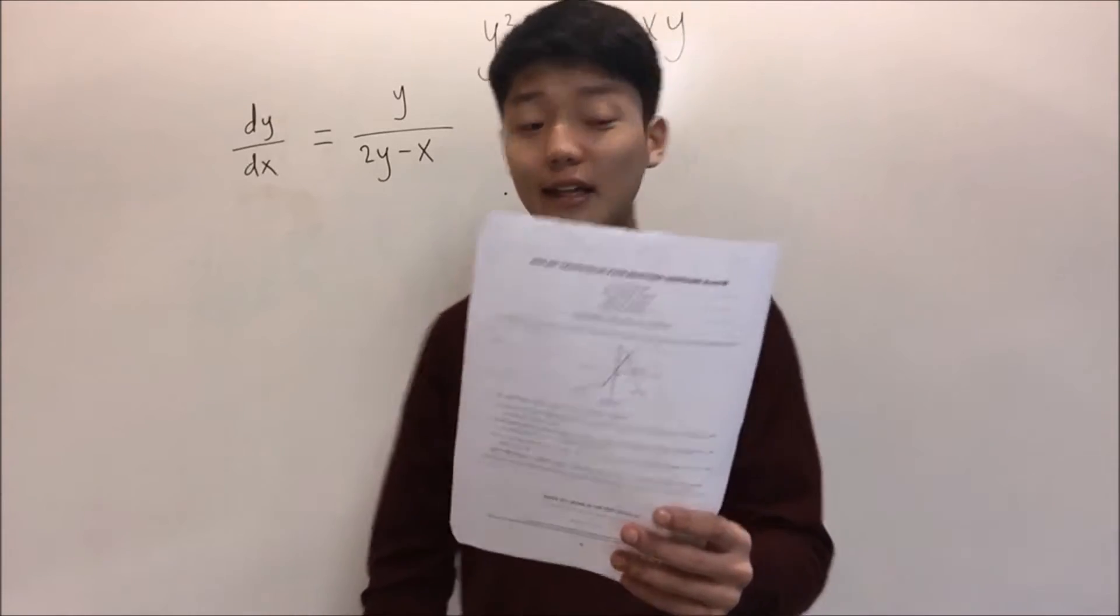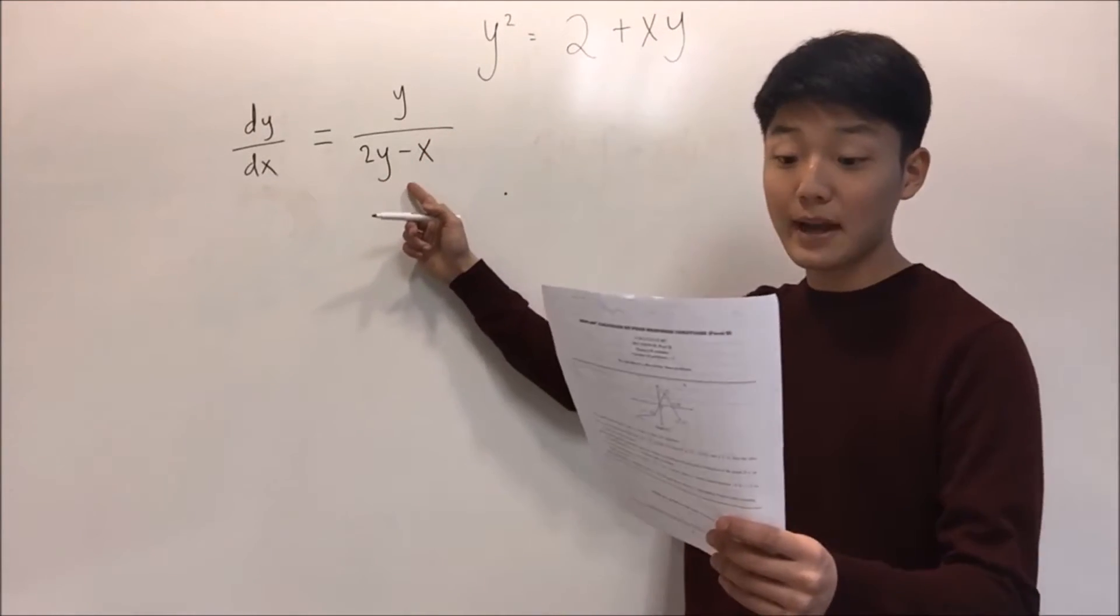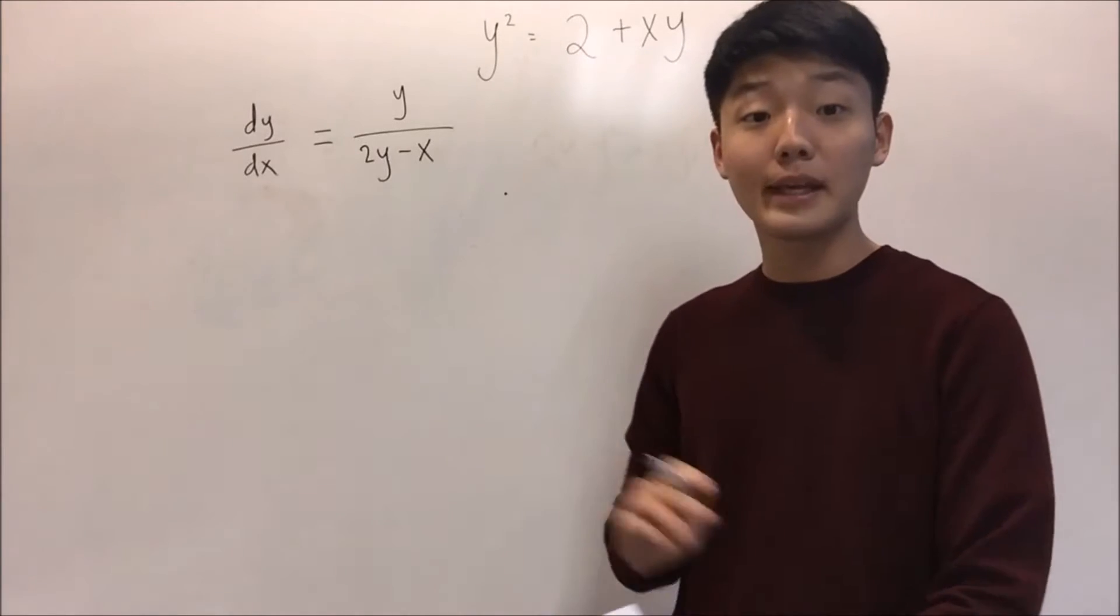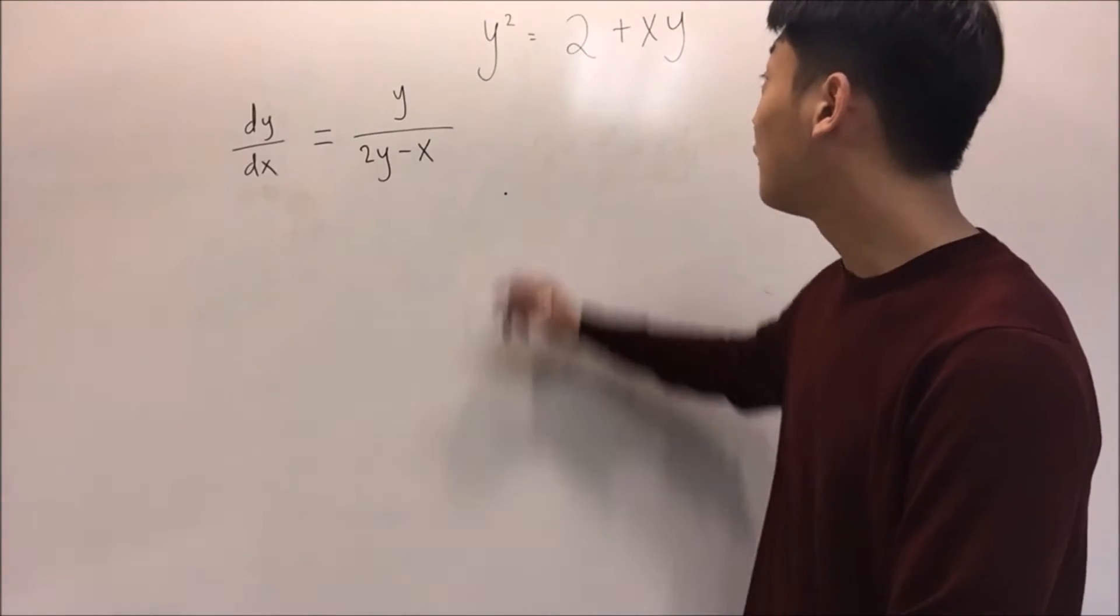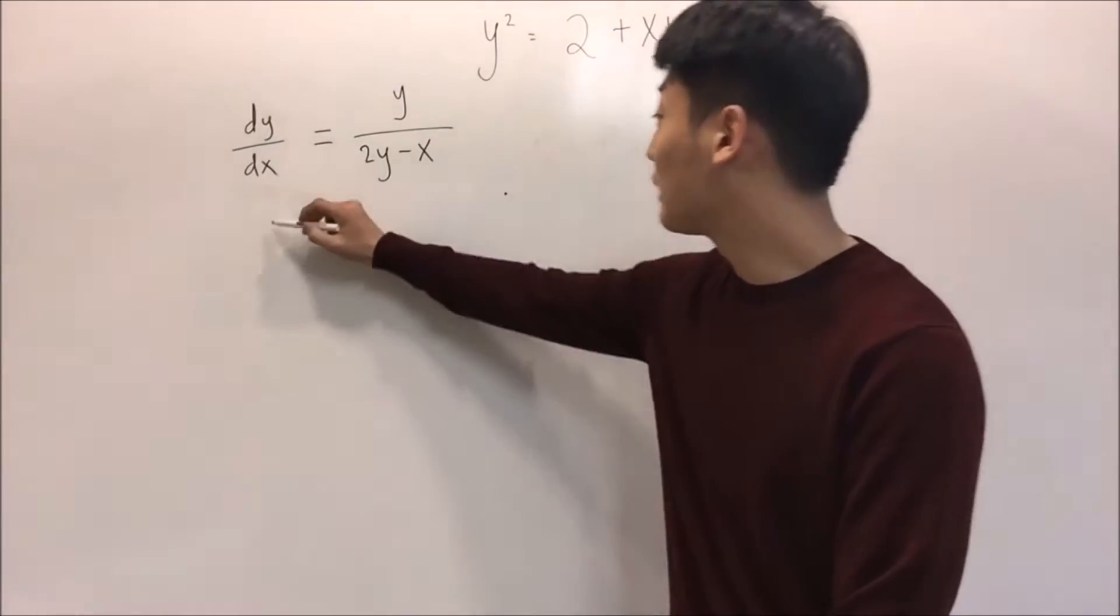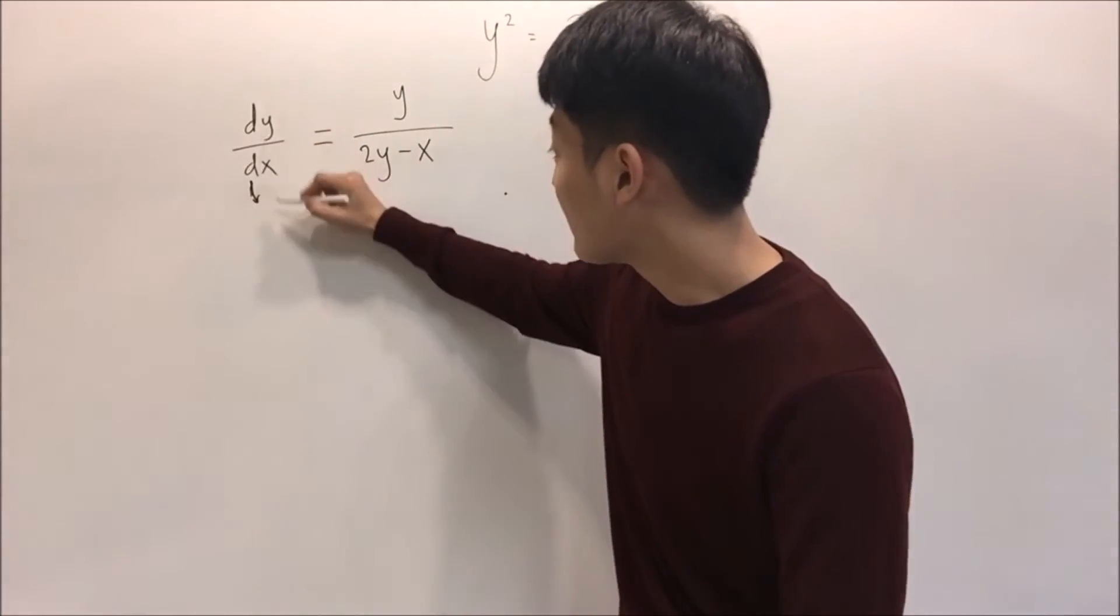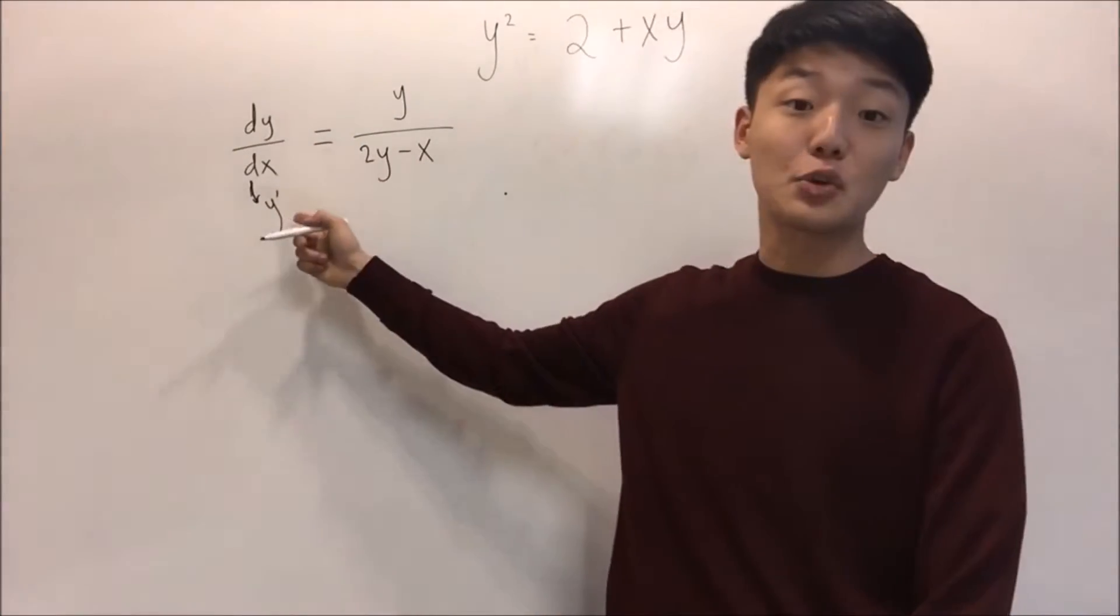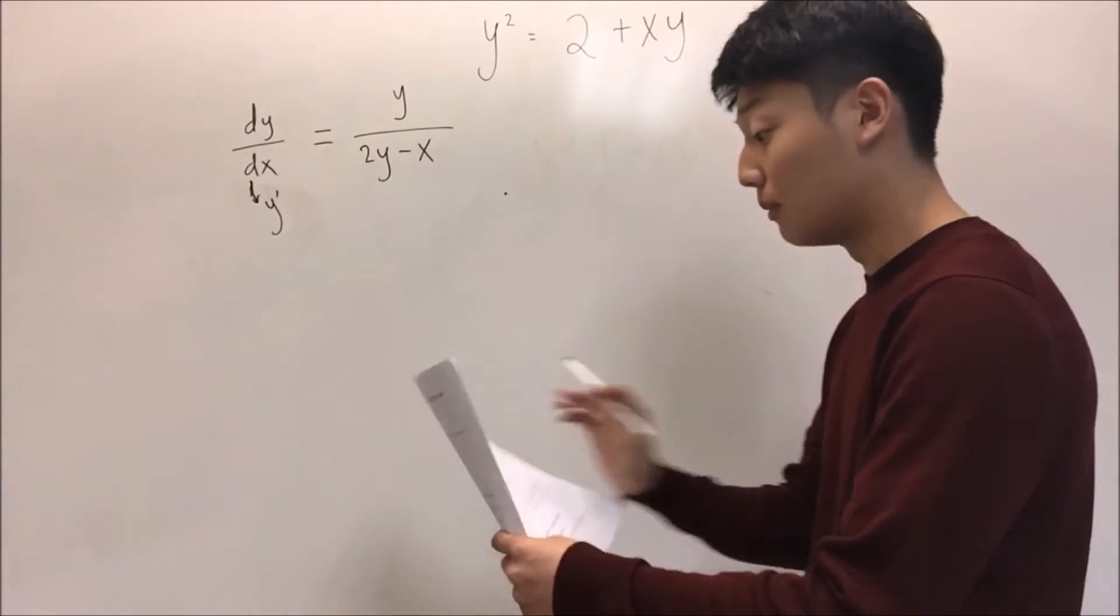5A states: show that dy/dx equals y over 2y minus x. So before we begin, what is dy/dx? dy/dx is slope of function y. And to write it more clearly, we can say dy/dx equals y prime. This is another notation to write dy/dx in Newton form.